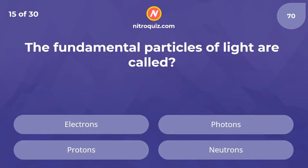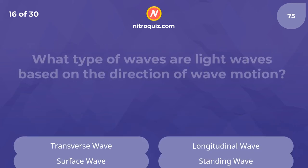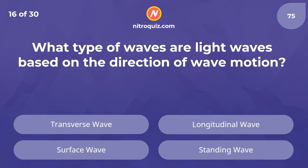The fundamental particles of light are called — the answer is photons. What type of waves are light waves based on the direction of wave motion? The answer is transverse waves.